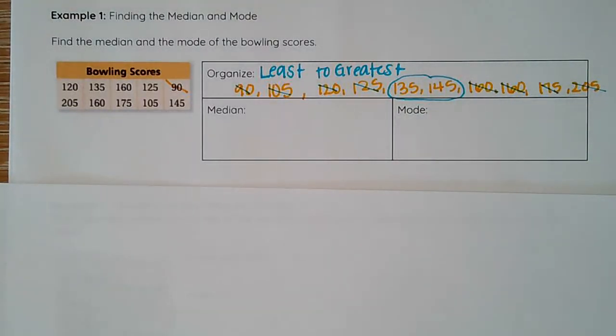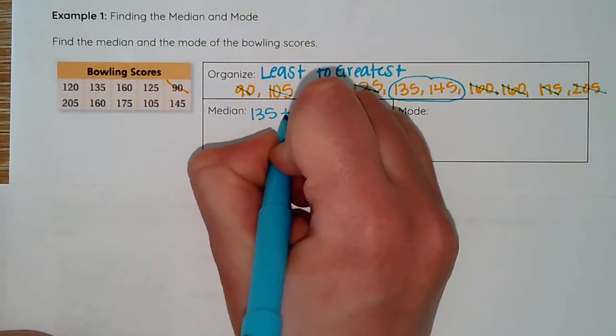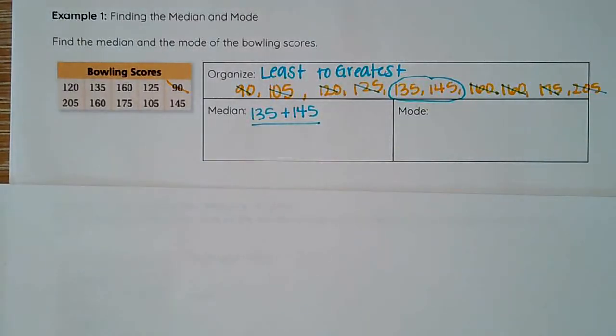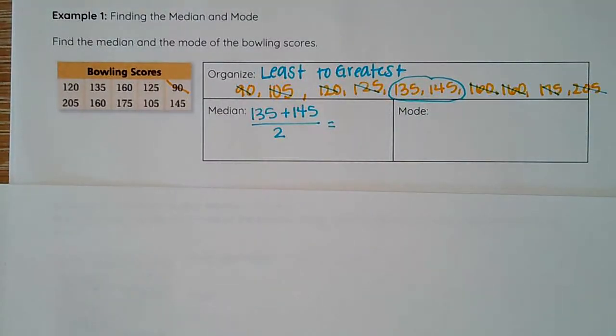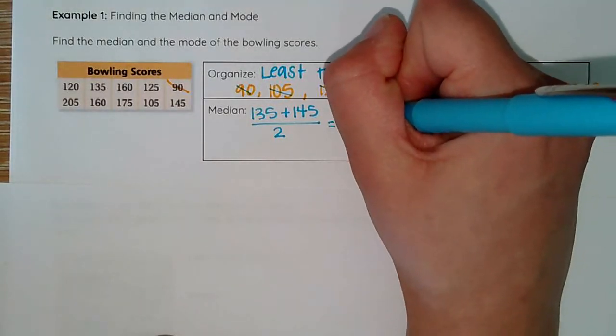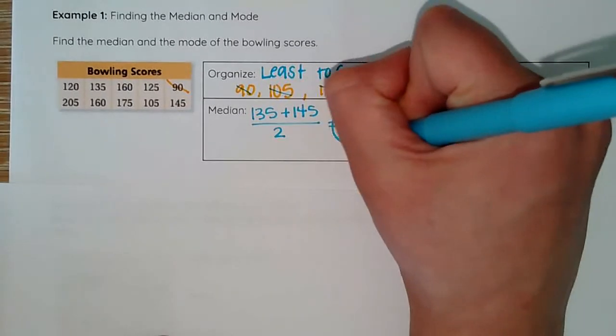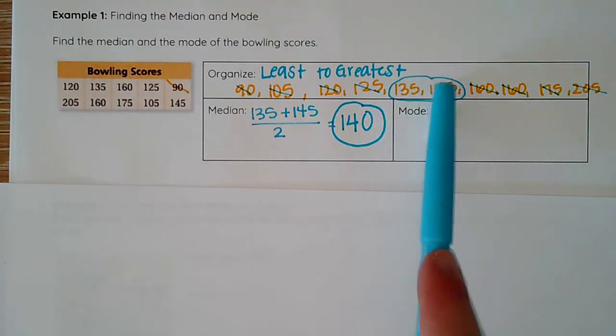What I do is I go ahead and add those together, get the sum, find the mean. 135 plus 145 divided by 2. I can grab my calculator to figure this out or do it on pencil and paper, and I've got a median of 140.